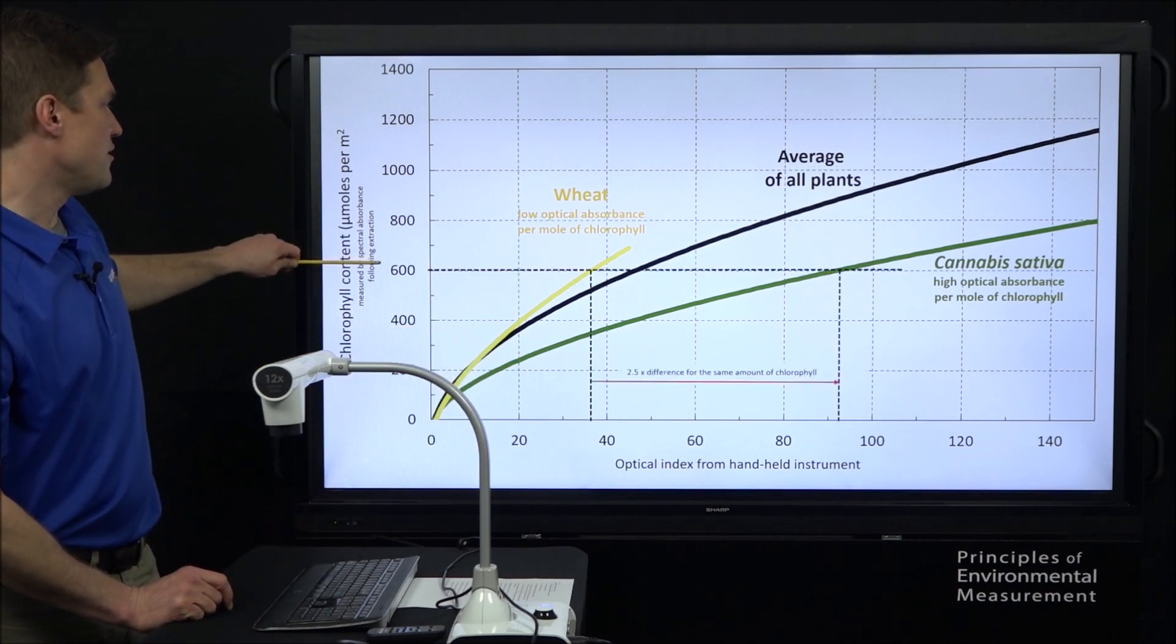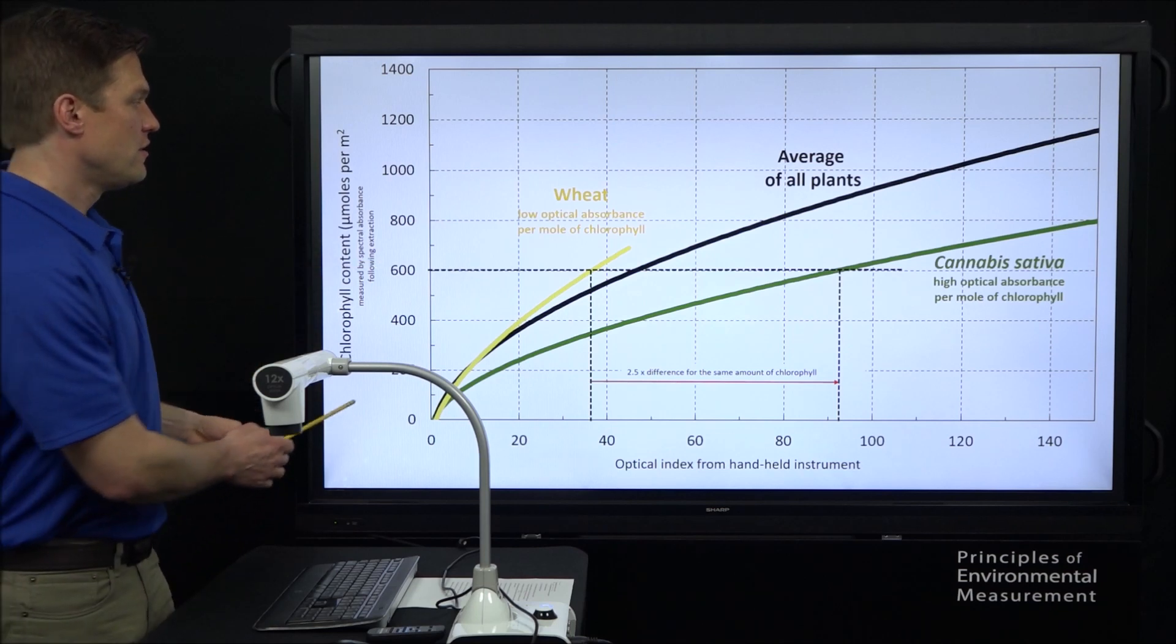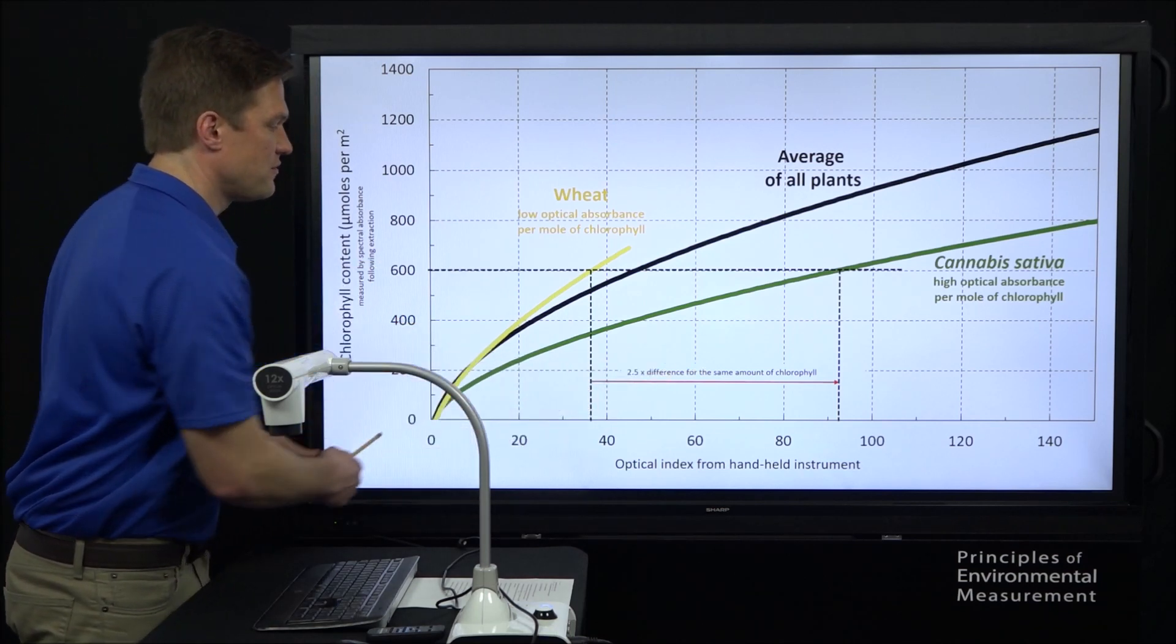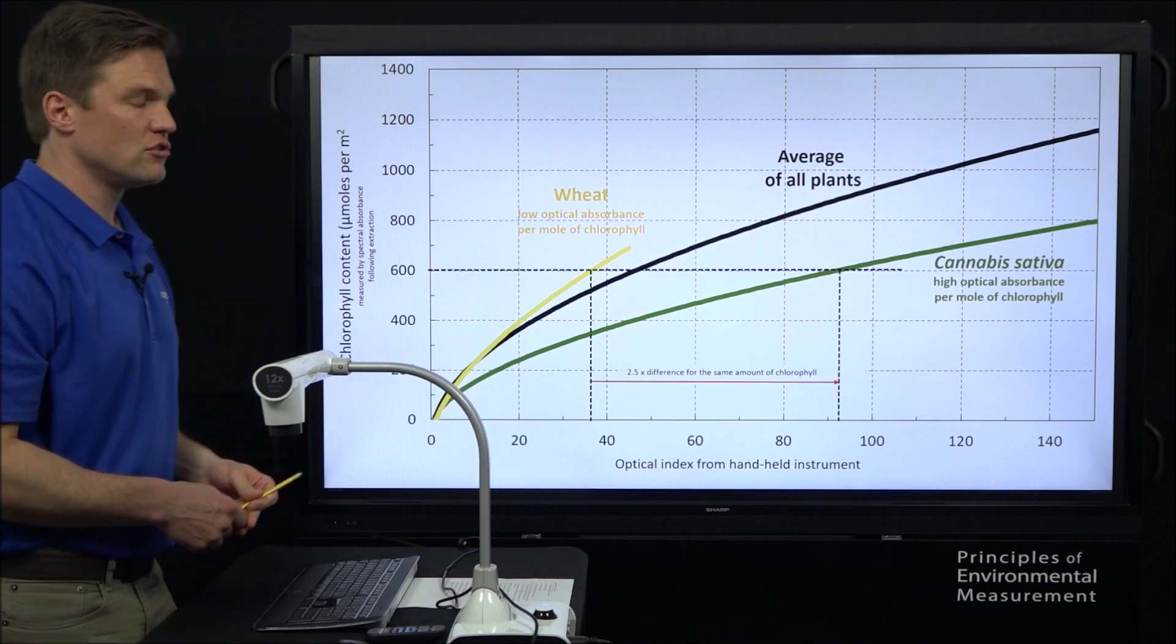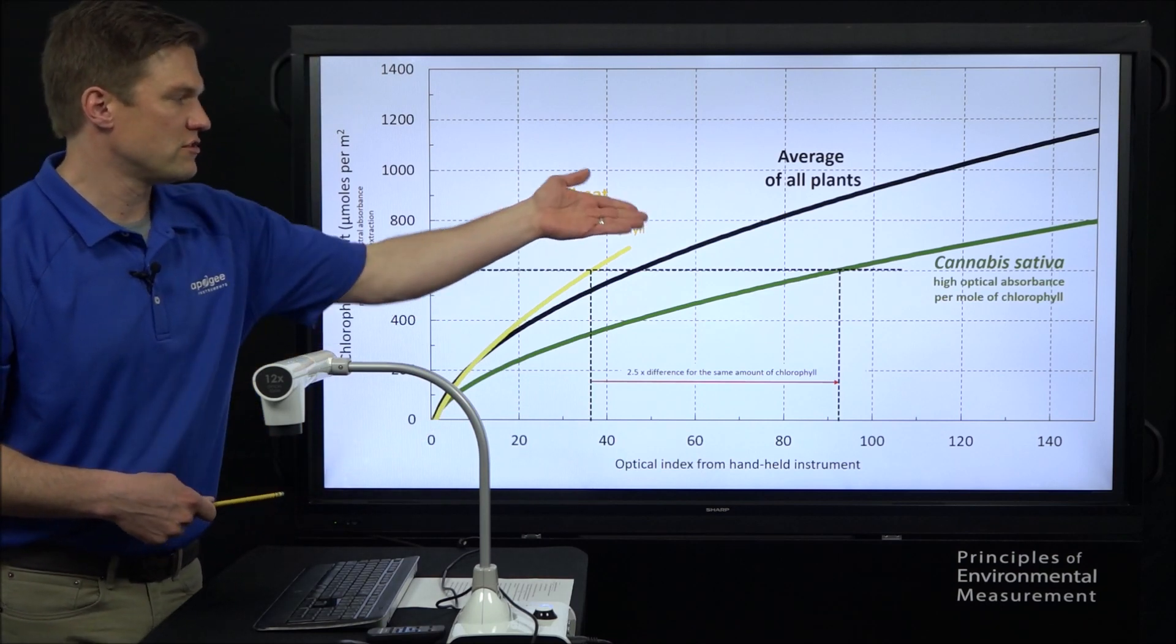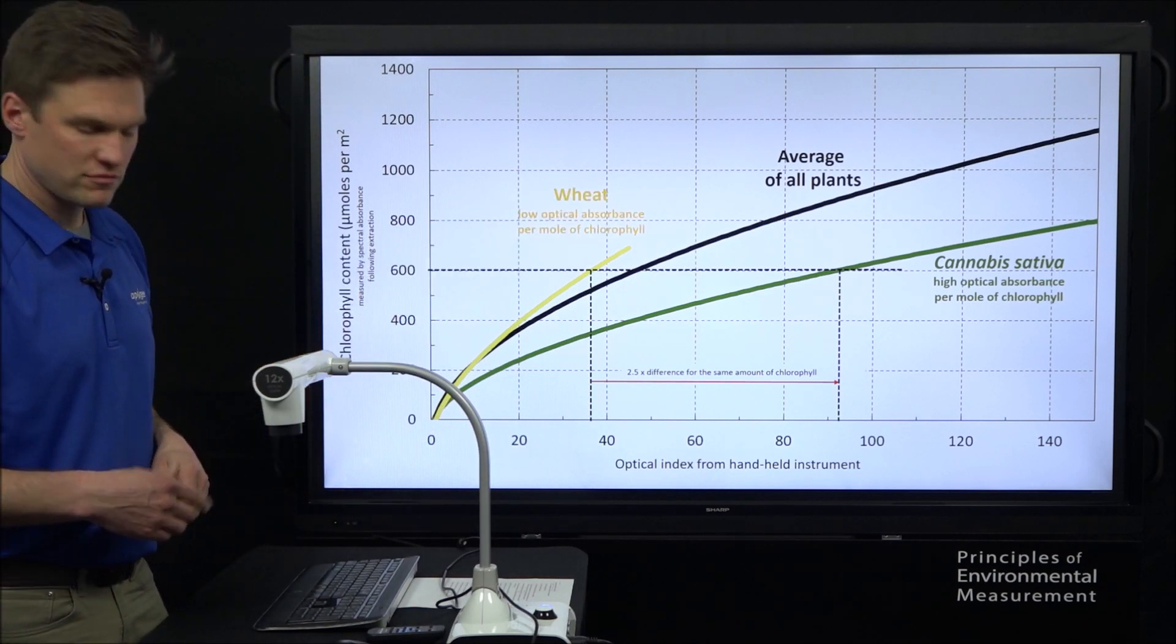If you're looking at the same chlorophyll value, it's about a two and a half times difference in CCI. And so this new set of coefficients will be great for our cannabis customers.